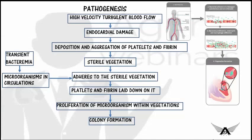Now let us look at pathogenesis. Imagine a heart with an abnormality in the cardiac valve. This causes abnormal, turbulent blood flow, which leads to endocardial damage and inflammation at the site. When inflammation starts, there is accumulation of platelets and fibrin at the damaged site, forming a vegetation or thrombus. This thrombus is known as a sterile thrombus because there is no invasion by bacteria or organisms yet.